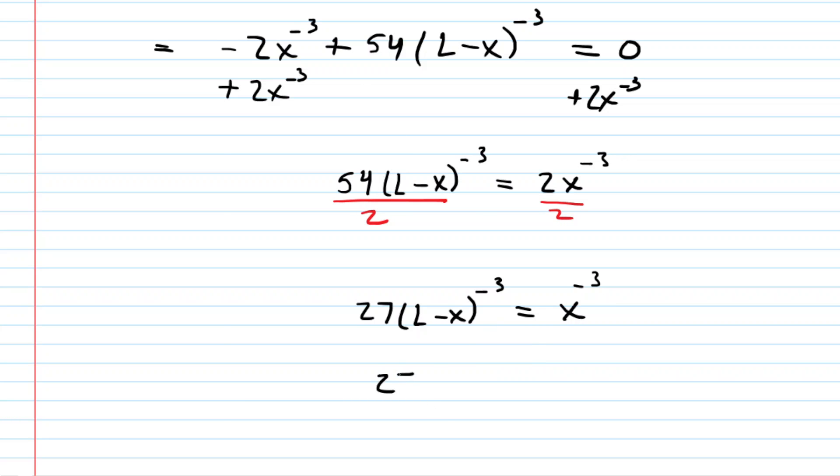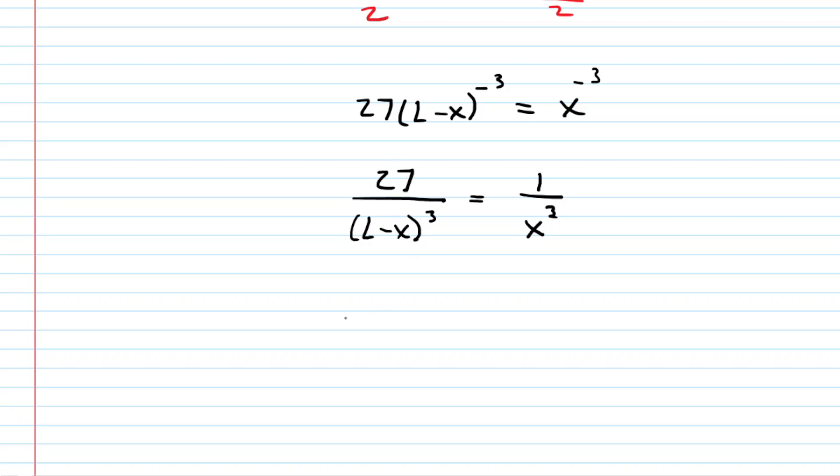We then might find it helpful to rewrite those powers back in their positive form. So we're going to send the L minus x to the denominator so it's a power of positive 3. We'll send the x to the negative 3 to the denominator so it becomes x to the positive 3 as well. Maybe we could cross multiply. So we would have 27x to the power of 3 is equal to L minus x to the power of 3. And then it would be useful if we cube rooted both sides. Be a little bit careful. When you cube root both sides, you're going to have to cube root that 27 or whatever number you have in your homework question. So in this case, the cube root of 27 is 3. But if it's an ugly number that is not a perfect cube, you'll have to pick up a calculator and do that.